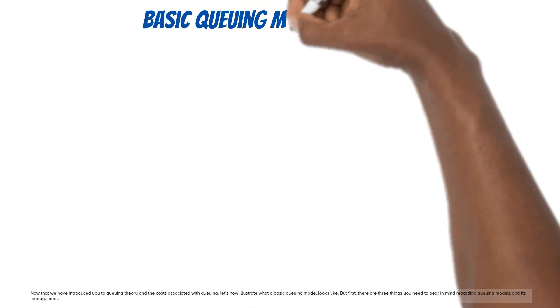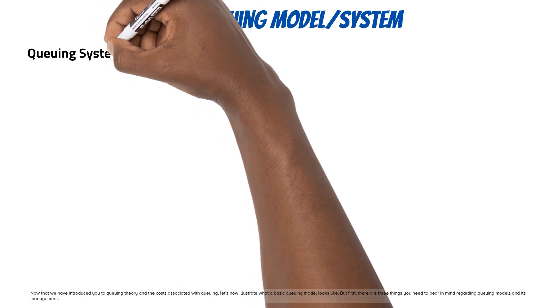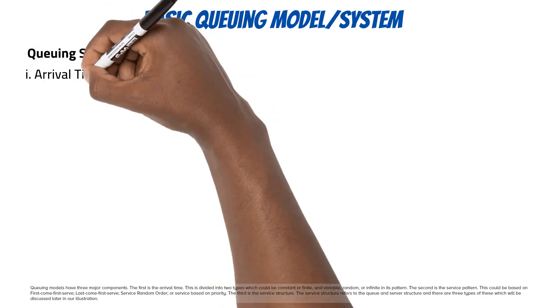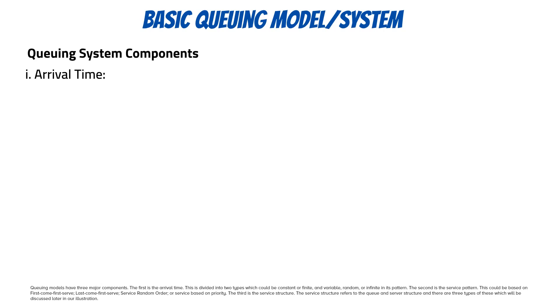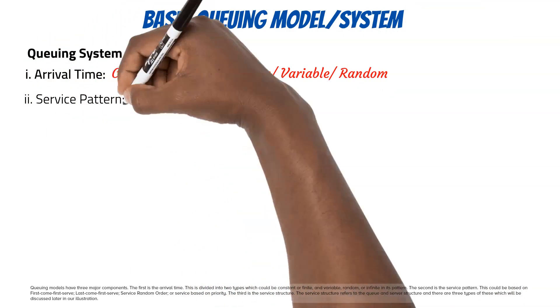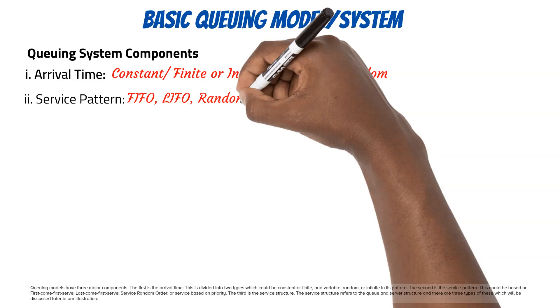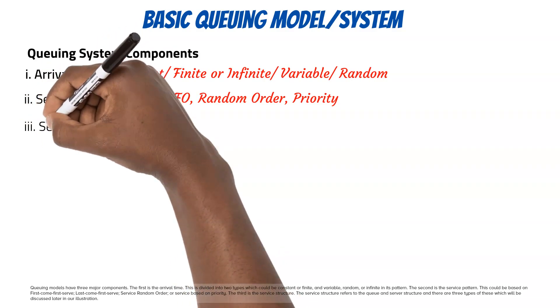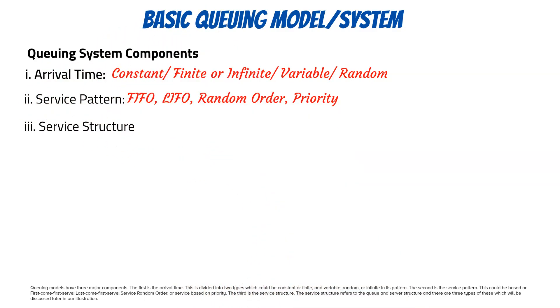Now that we have introduced queuing theory and the costs associated with queuing, let's illustrate what a basic queuing model looks like. There are three major components of queuing models. The first is the arrival time, which could be constant or finite, and variable, random, or infinite in its pattern. The second is the service pattern, which could be first come first serve, last come first serve, service random order, or service based on priority. The third is the service structure, which refers to the queue and server structure — there are three types, to be discussed in the illustration.